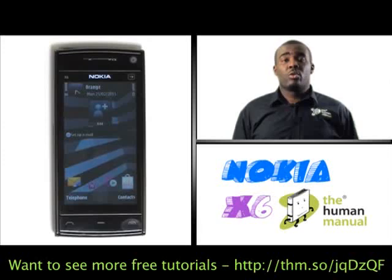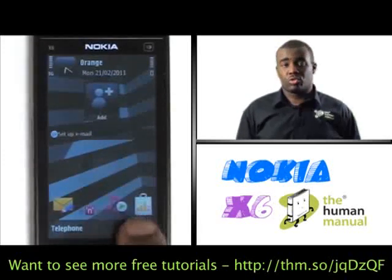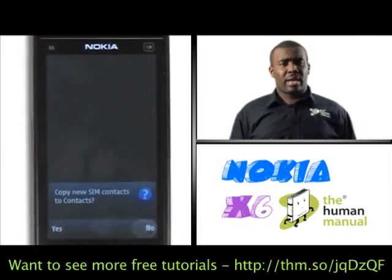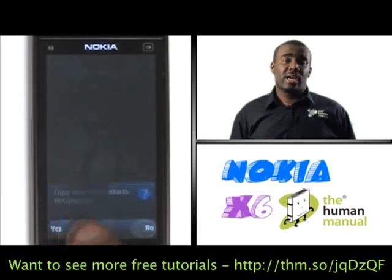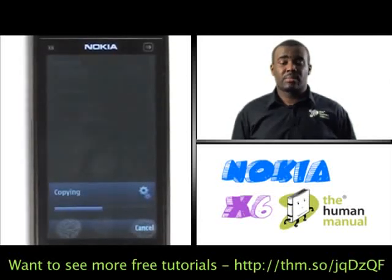To start with, what you want to do is touch Contacts at the bottom right of your screen. If this is the first time you're getting access to your phone book, it's going to ask you whether you want to copy your names and numbers from your SIM card. Please select yes, as it's best to keep all your names and numbers in one particular place.